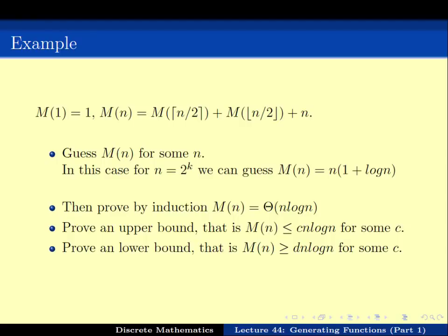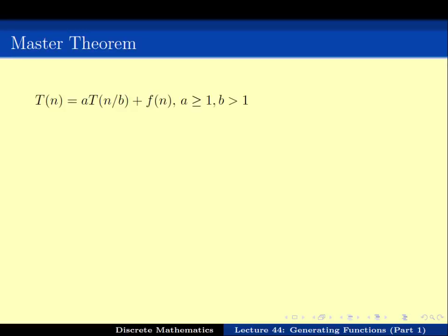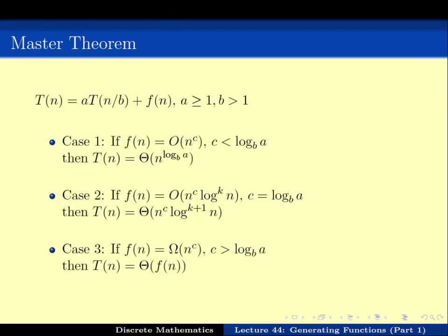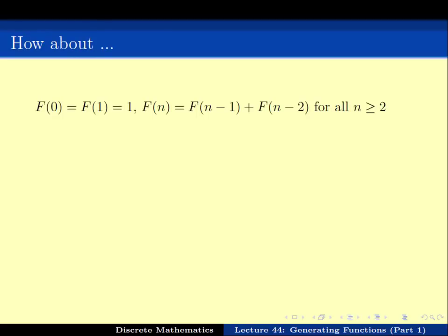So we have two techniques. The first technique is when we can guess the formula for the recurrence exactly, possibly by unfolding the definition. The second technique is when we cannot guess it exactly but we can prove a theta notation or big O notation, which means proving an upper bound and a lower bound. We also saw that there is a master theorem which can help us guess the solution easily. But still we have certain recurrences for which we don't know how to solve them.